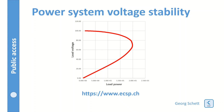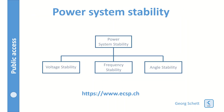Today I want to talk about voltage stability in a power grid. The power system stability consists of three distinct criteria which are however strongly interconnected. These criteria are: first, voltage stability; second, frequency stability; and third, angular stability.